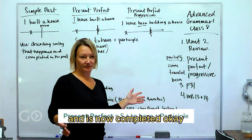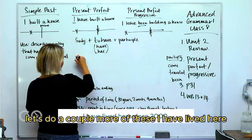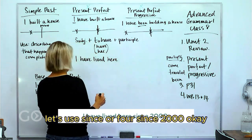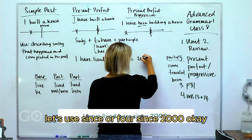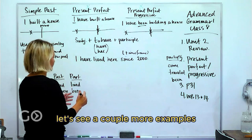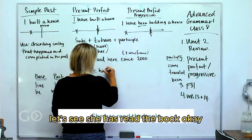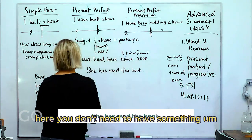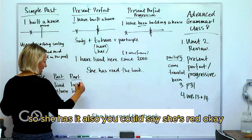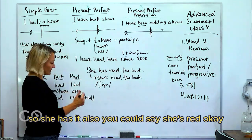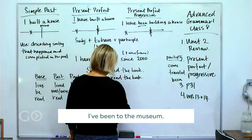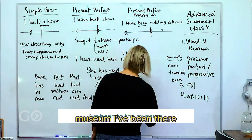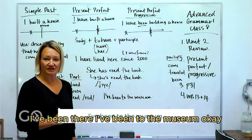A few more examples: 'I have lived here since 2000.' 'She has read the book' — you don't need a time piece with every sentence, and you can contract it to 'she's read.' Also: 'I've been to the museum' — meaning I've visited there before.